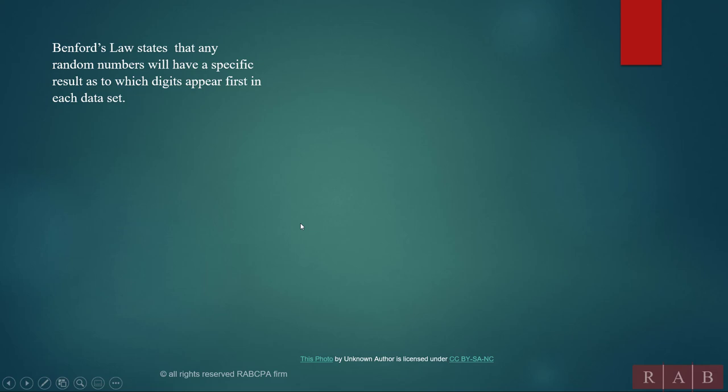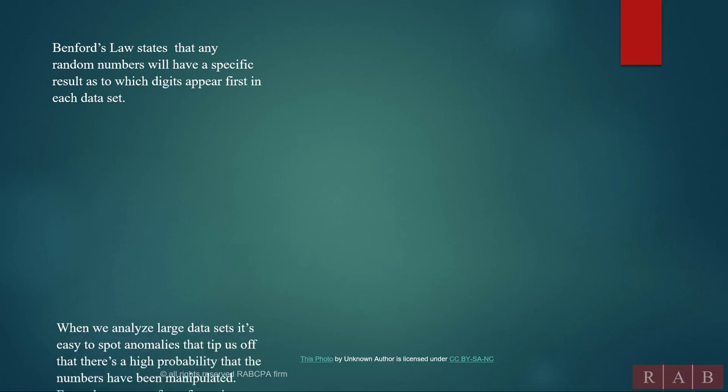So the reason for this is that what it simply does is it takes the first number that appears in a data set, and we analyze this data set, and we spot anomalies that tip us off that there's a high probability that the numbers have been manipulated. From there, we can perform a forensic accounting. Once I know that there's problems with the data we have, we can then dig down and find out what happened.